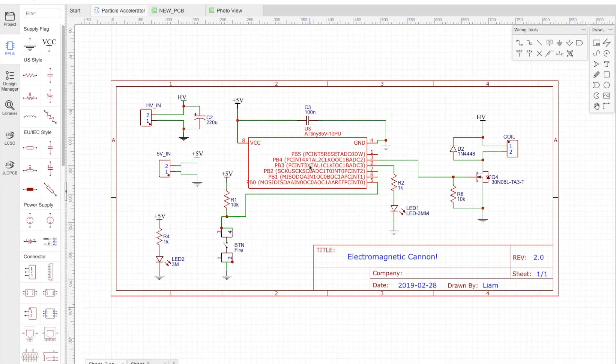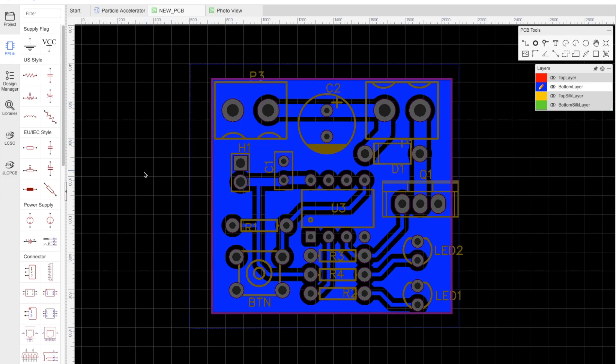This is the circuit that I designed to control the electromagnet, then I laid it out as a PCB and produced it on a mill.